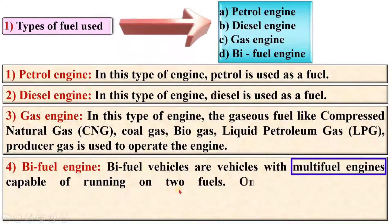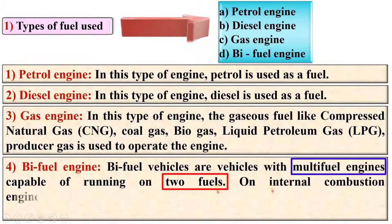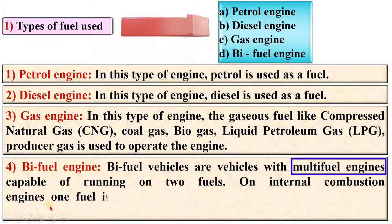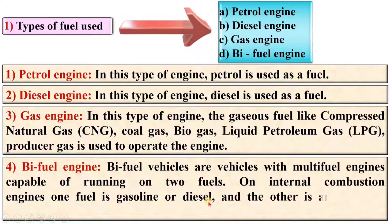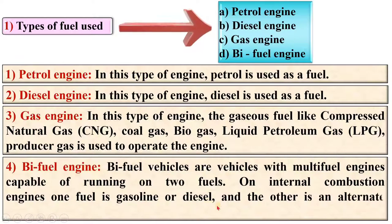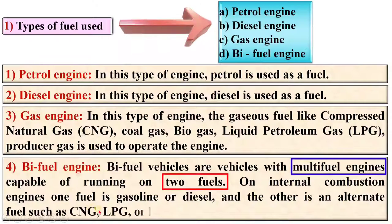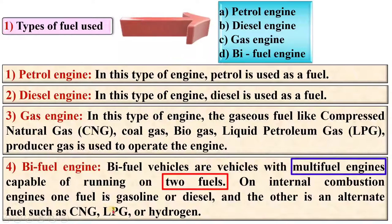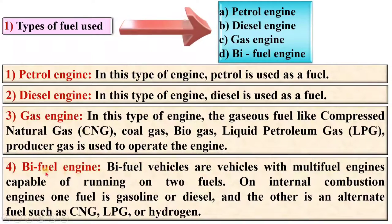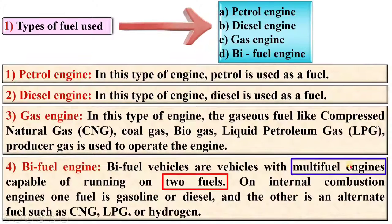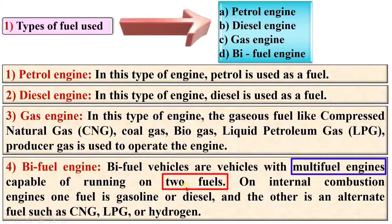In a bi-fuel engine, vehicles have multi-fuel engines capable of running on two fuels. One fuel is gasoline or diesel, and the other is an alternate fuel such as CNG, LPG, or hydrogen. In short, bi-fuel engines are capable of running on two fuels.